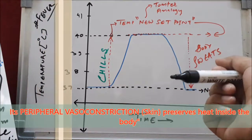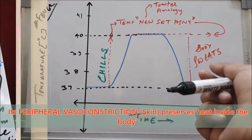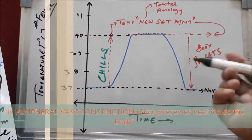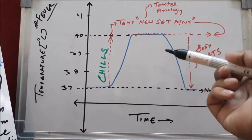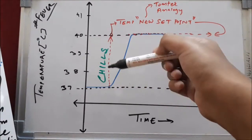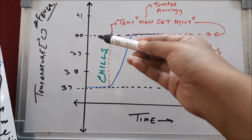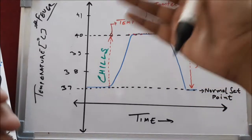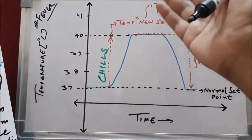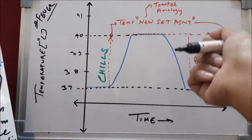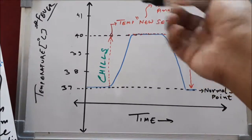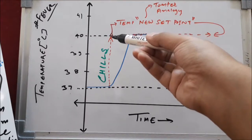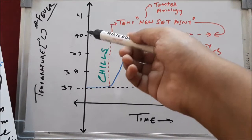Chills are contributed by vasoconstriction and shivering of the body. According to thermodynamic principles, this muscular vibration generates heat. The idea behind fever is that it creates a hostile environment for the microorganisms affecting our body, restricting their growth. After the body reaches around 40 degrees Celsius temperature, there is a new set point established.